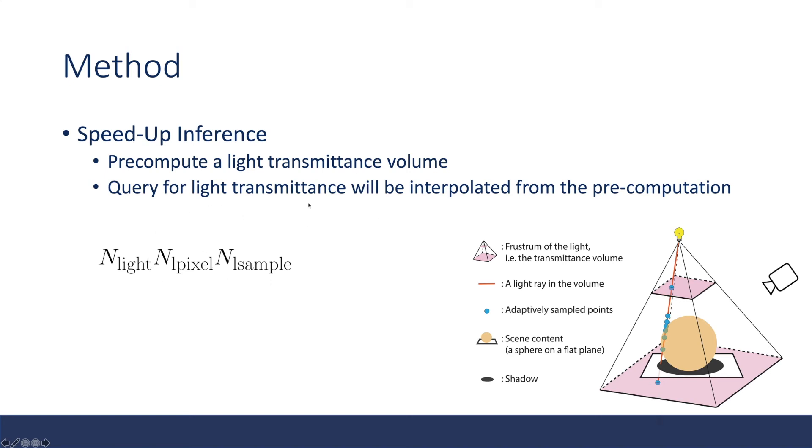During inference, if you want to query for light transmittance, we can just shoot another ray here and directly interpolate. We can use trilinear interpolation from this pre-computation. The complexity is reduced. It is still a little bit complex, but it's already much better than the previous one.